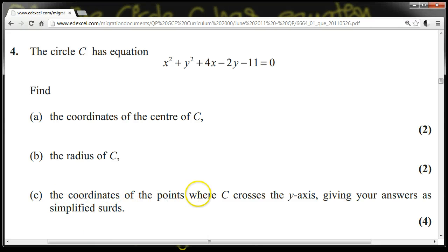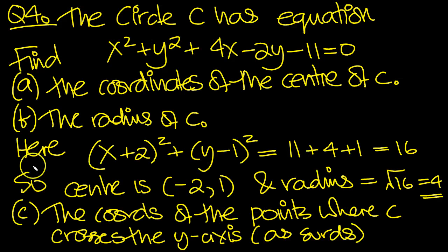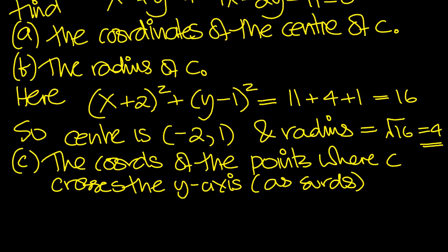The coordinates of the points where C crosses the y-axis, giving your answers as simplified surds. So I've summarized the question here. C crosses the y-axis when x is 0. So input x is 0 into this equation for C.